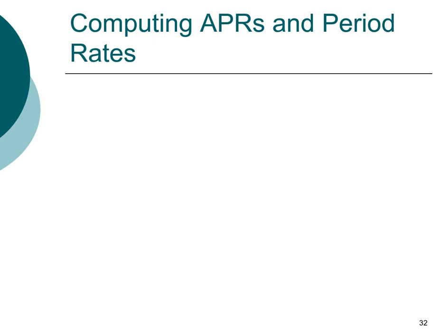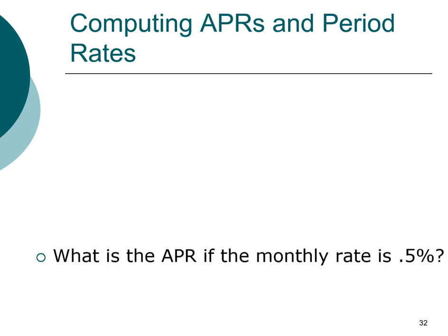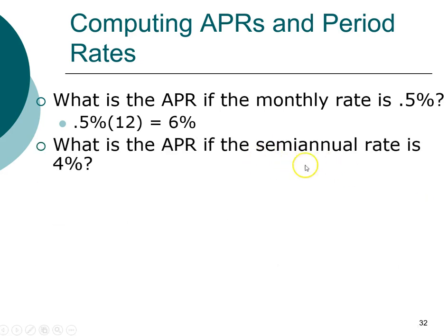Let's go through a few simple basic examples to consolidate the concept between annual percentage rate and period rates. If you have a monthly interest rate of half a percent, what is the APR? APR is annual percentage rate, so how much is it per year? Simply 6% — 12 months per year times half a percent per month. Similarly, semi-annual means two times per year. If you have a 4% interest rate every six months, what is the APR? That would be 8%.